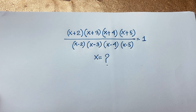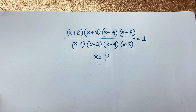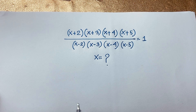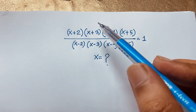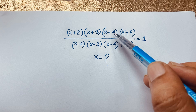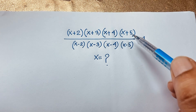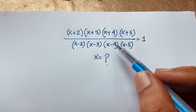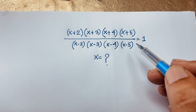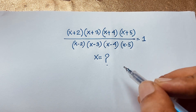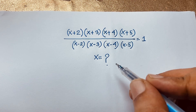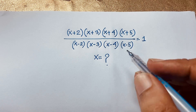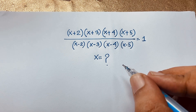Hello everyone, welcome to Russia's Classroom. Today we have solved a nice Math Olympiad question. This question is: (x+2)(x+3)(x+4)(x+5) over (x-2)(x-3)(x-4)(x-5) equals 1. We find out what is the value of x in this algebra problem.